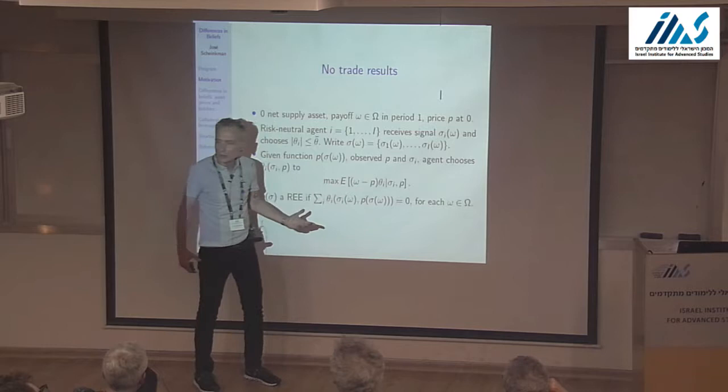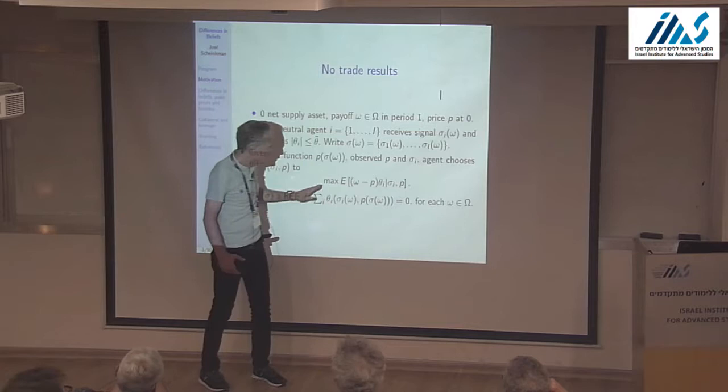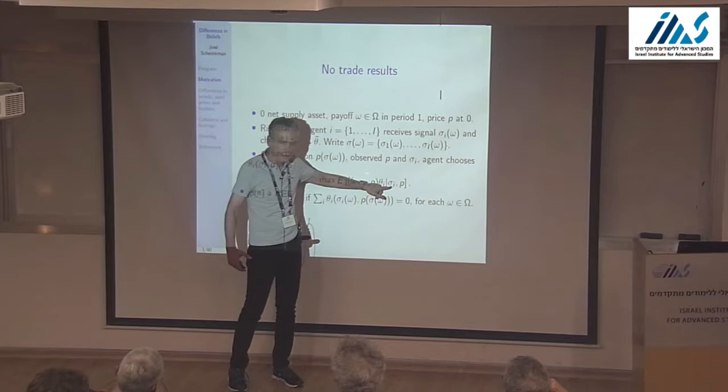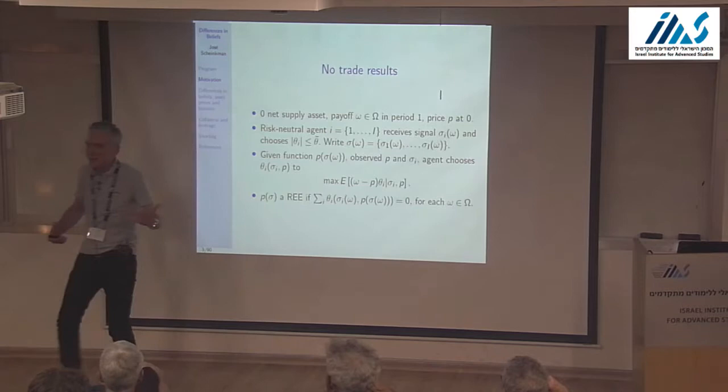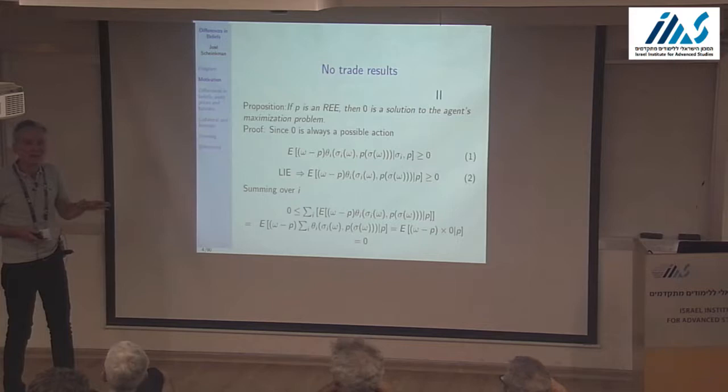A pricing function is a function of the aggregate signal. Given that pricing function and the actual observed price, and the information of each agent, agents choose a position that maximizes expected return — conditioned on the information they receive, sigma_i and P. A rational expectations equilibrium is a price such that supply equals demand; here supply is zero, so demand must add up to zero.